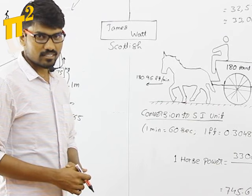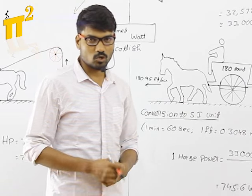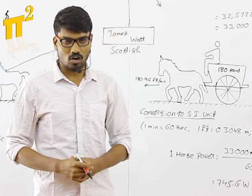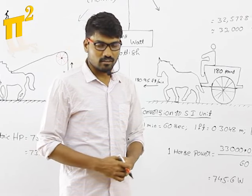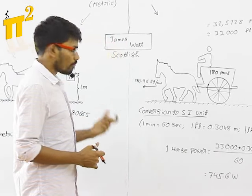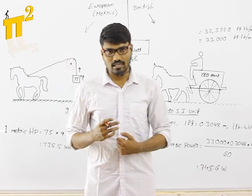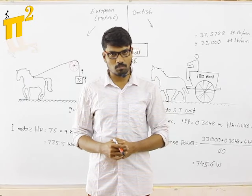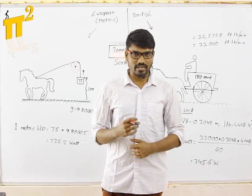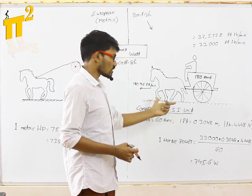James Watt is a Scottish inventor who introduced the word horsepower. When he wanted to compare or quantify his steam engine's output power, he had to use horsepower.